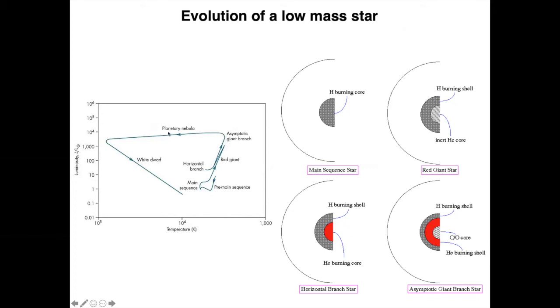And then once the planetary nebula is ejected, what is exposed is the inert carbon oxygen core, which is a white dwarf that does a little bit of cooling.